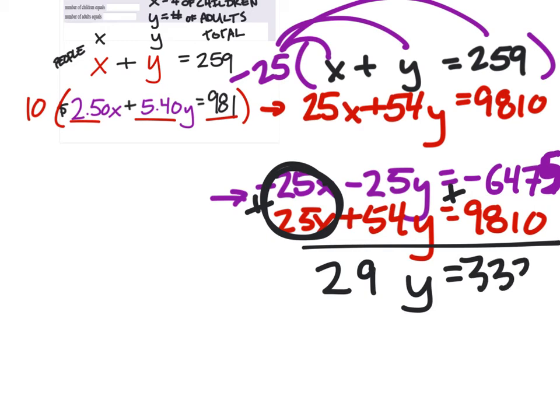And to solve for y, we're just going to divide both sides by 29. Which is 115. So y is 115.